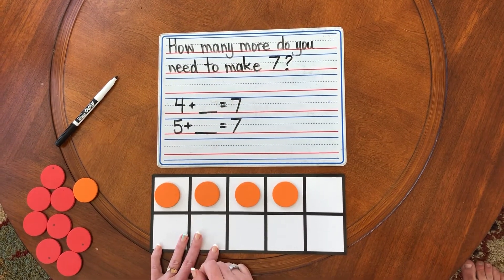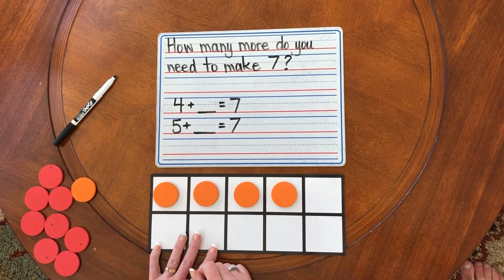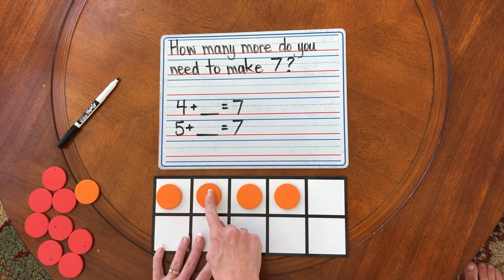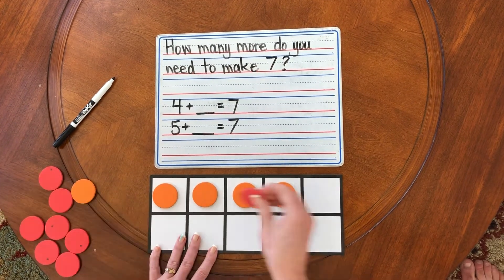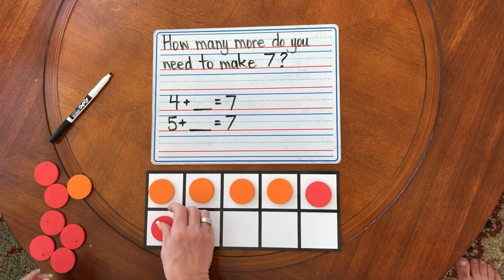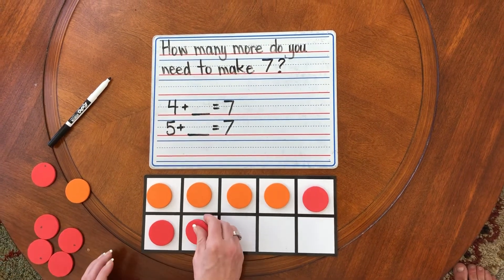How many more do you need to make seven? One, two, three, four, five, six, seven. Stop.